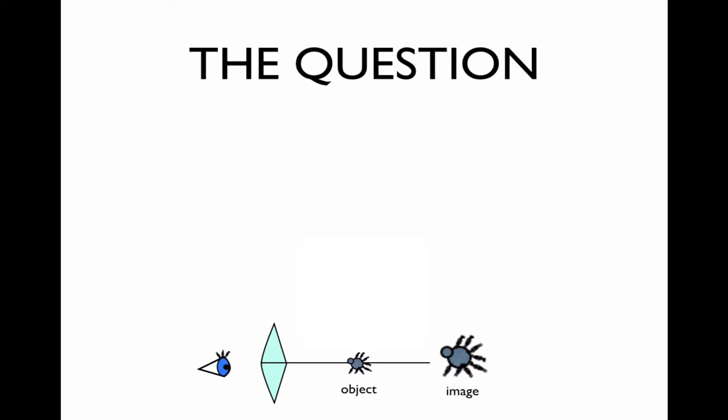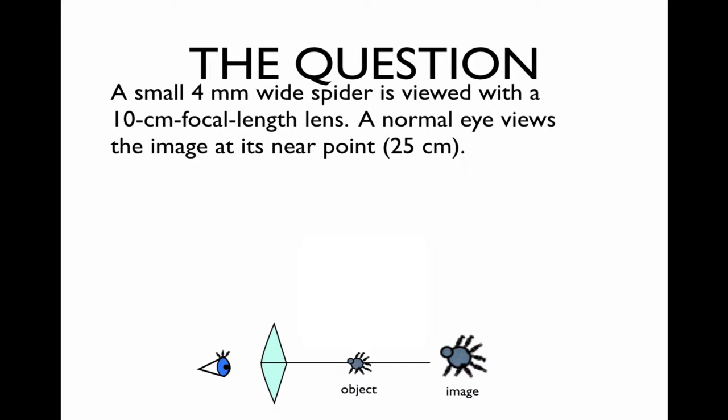This is video 26.1. We will be studying a magnifying glass. The question: A small 4mm wide spider is viewed with a 10cm focal length lens. A normal eye views the image at its near point, which is 25cm.